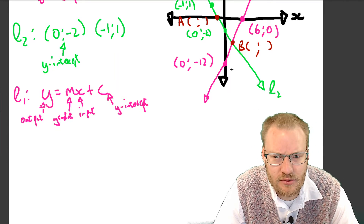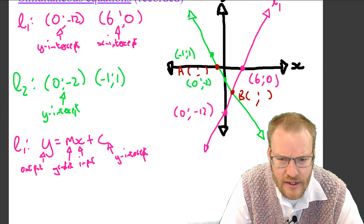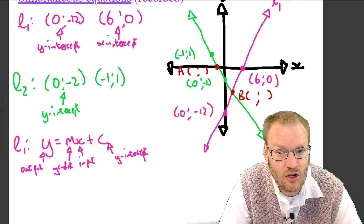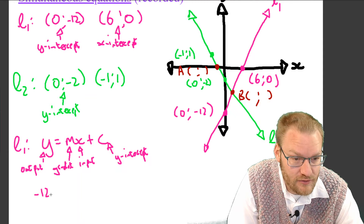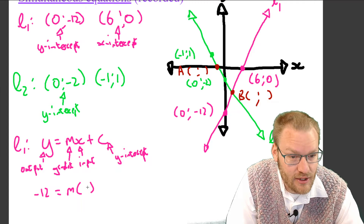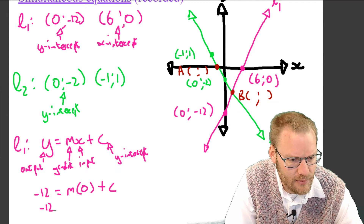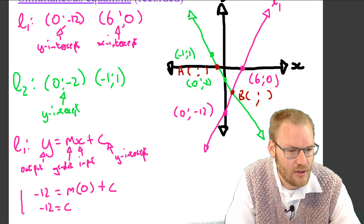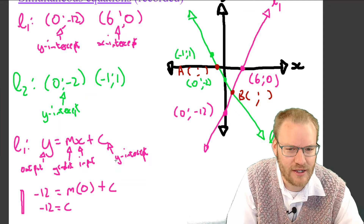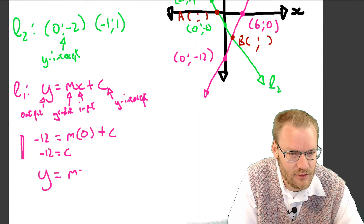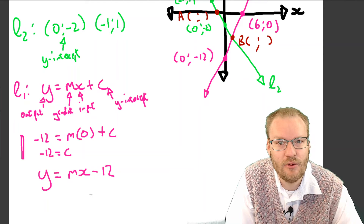We're given the y-intercept, which is negative twelve. If we substitute that point in — y equals negative twelve, x equals zero — we get negative twelve equals m times zero plus c. Zero times m is just zero, so negative twelve equals c. You don't have to show this step, but it's why c always works out to be the y-intercept. So our equation so far is y equals mx minus twelve.